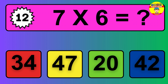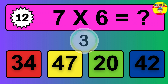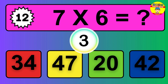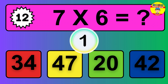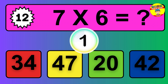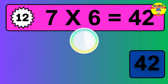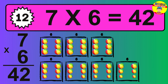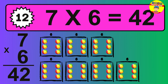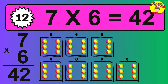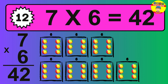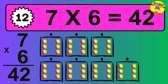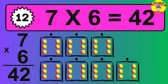Question 12. Seven times six equals what? The answer is seven times six is forty-two. To calculate, we have seven groups with six balls each one. So how many balls do we have? Forty-two balls.